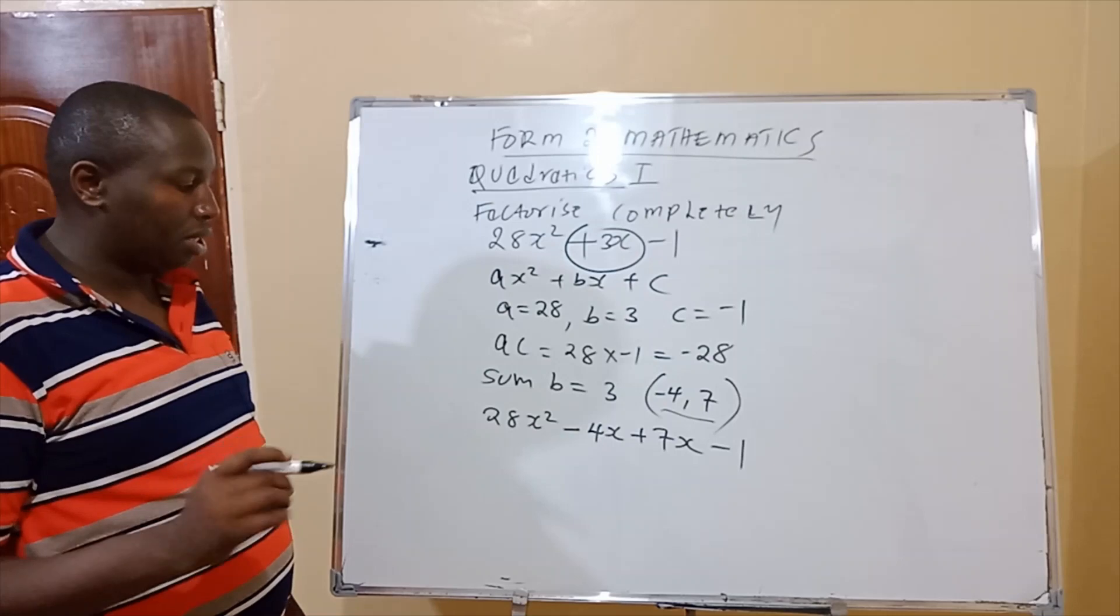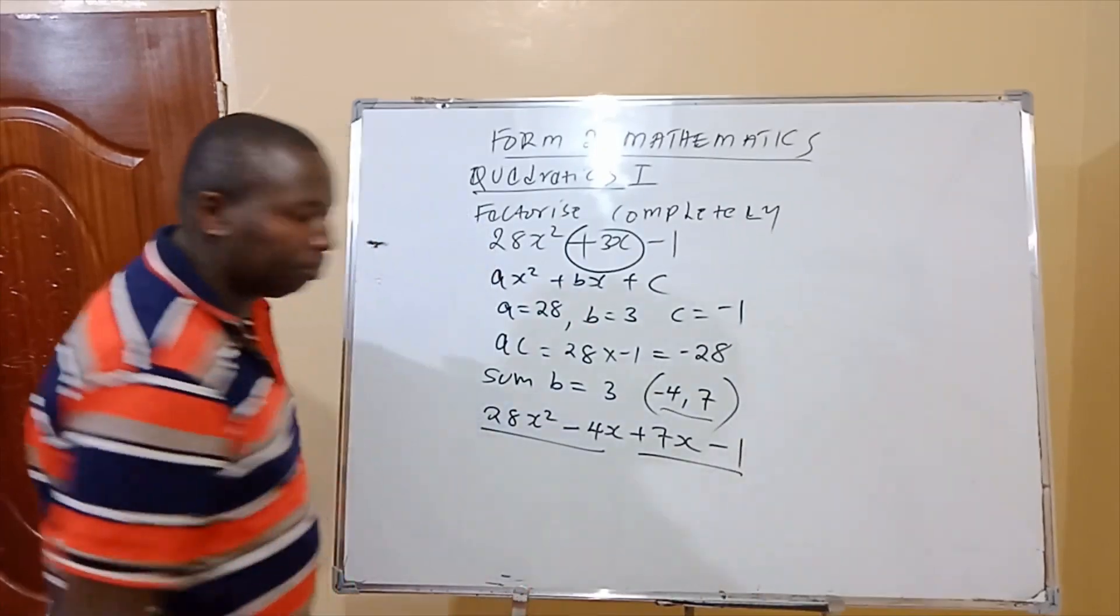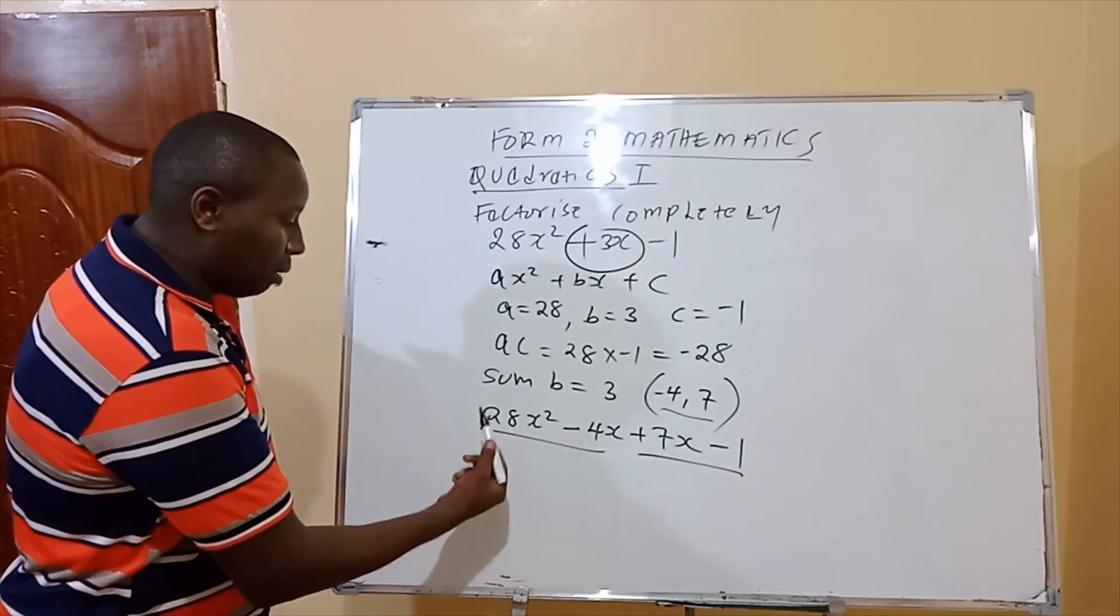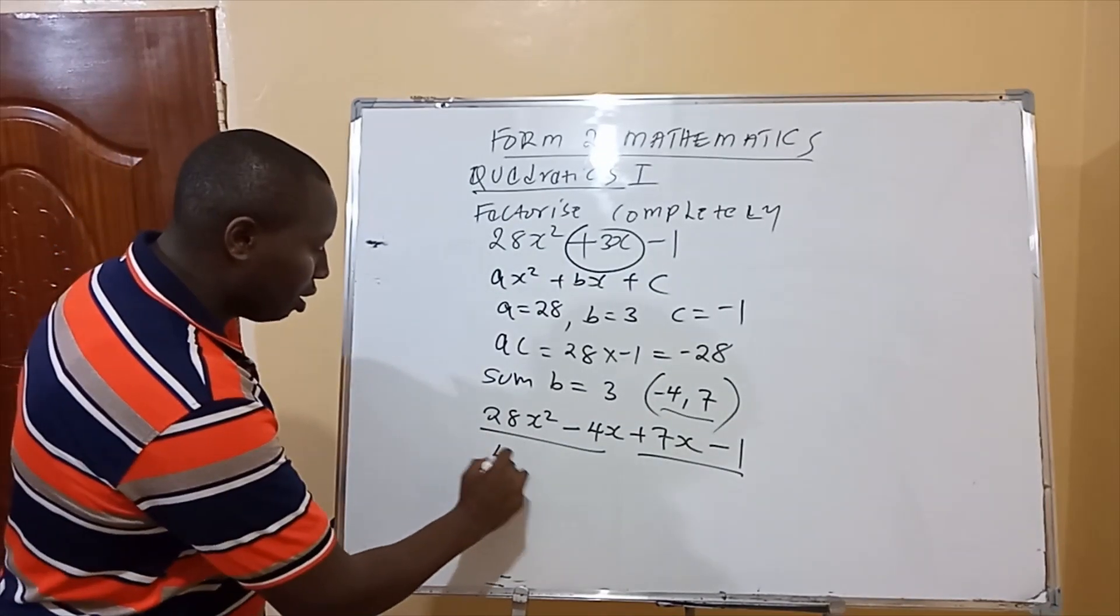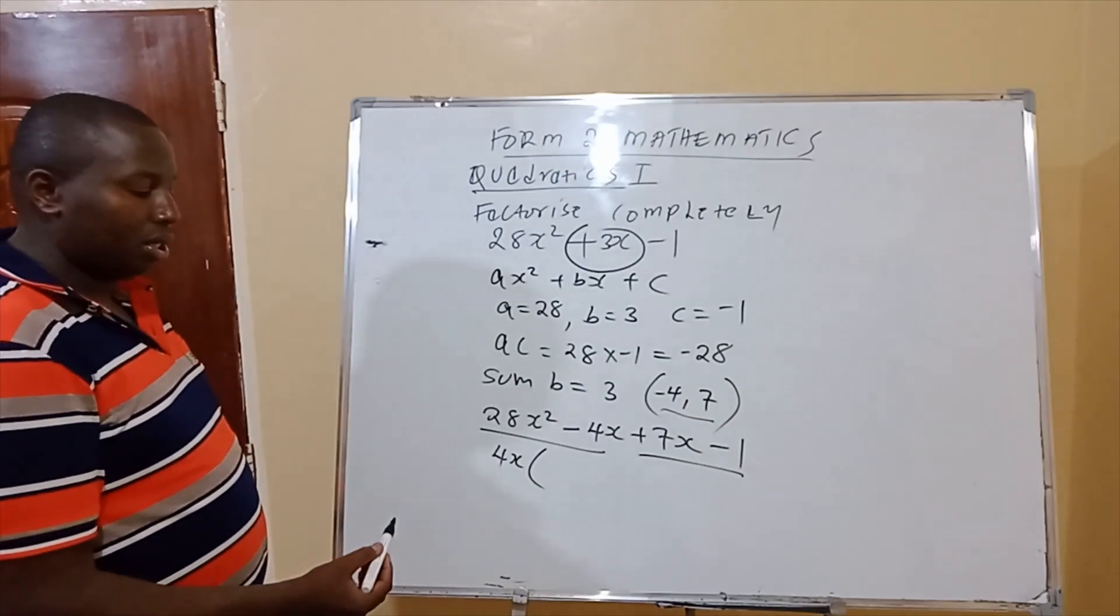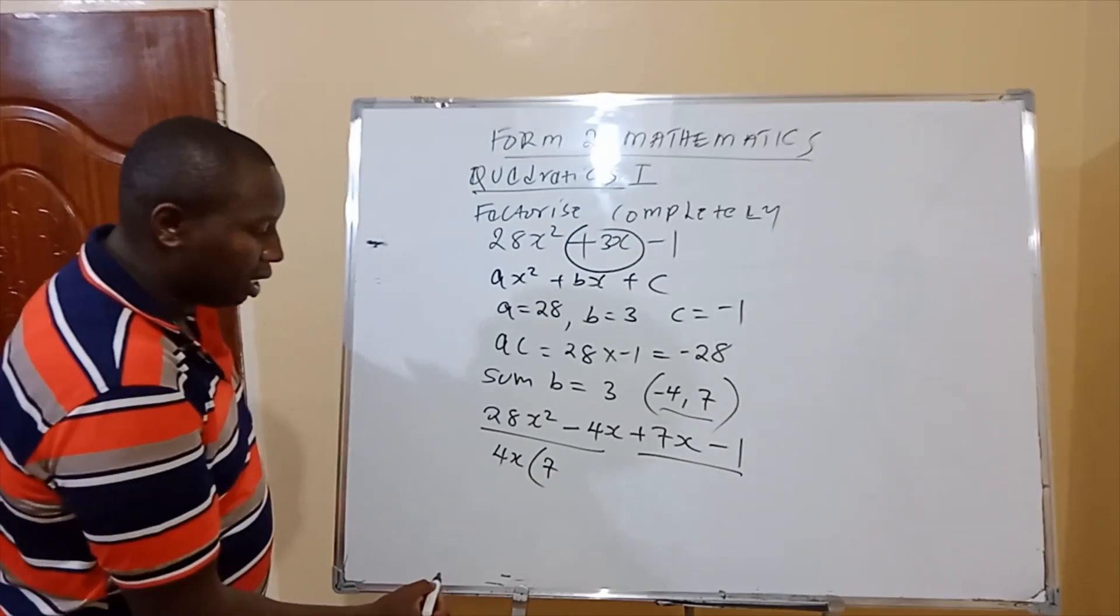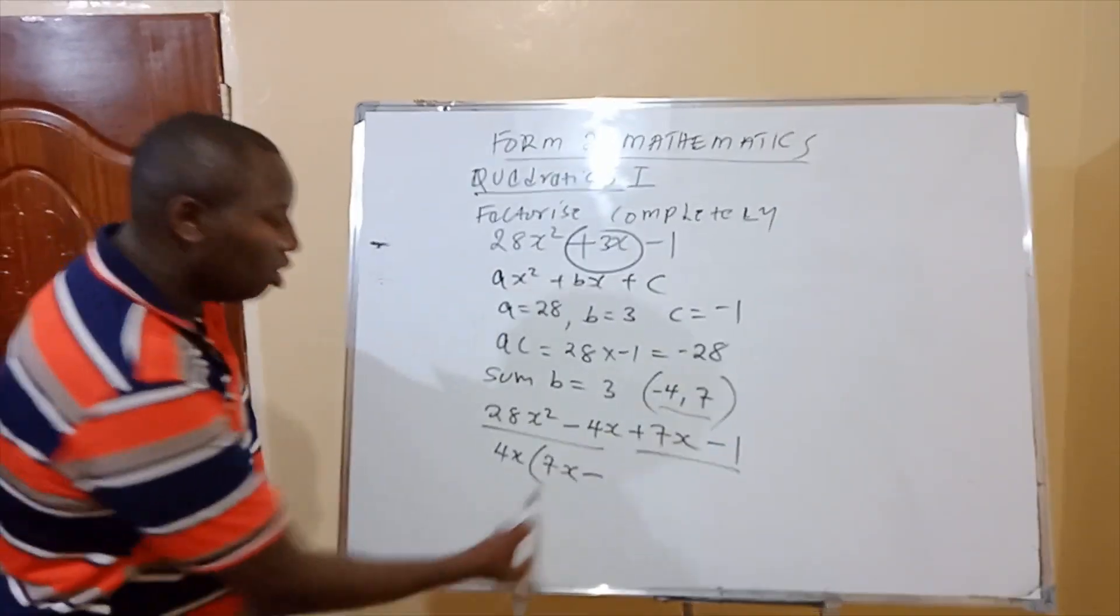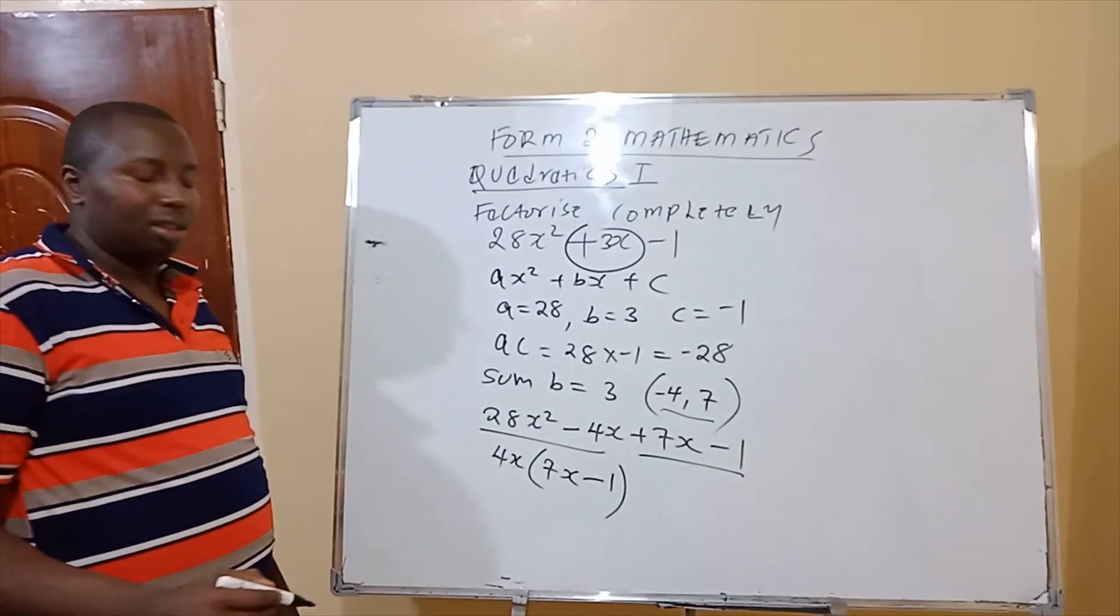Then the next step is you now group them. Factorization by grouping. The first two and the last two. You group that. So therefore, you check what is common between 28x squared and 4x. In this case, 4 is common, and then also x, because it is x squared and x. So therefore, when you factorize this, 28 divided by 4, you get 7. Then x squared divided by x, that is x. Minus 4x divided by 4x, you get 1. That's how you factorize that part.